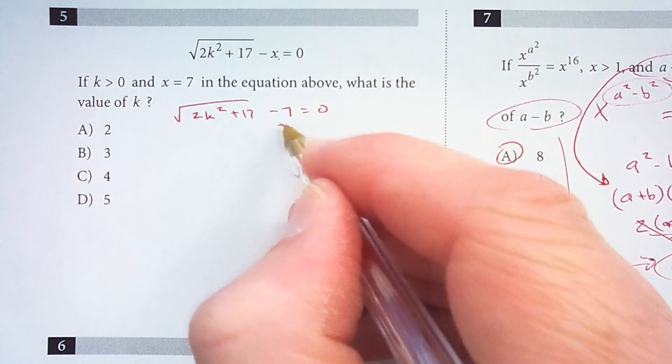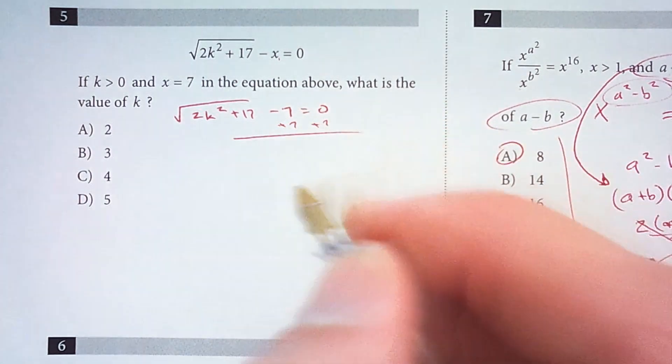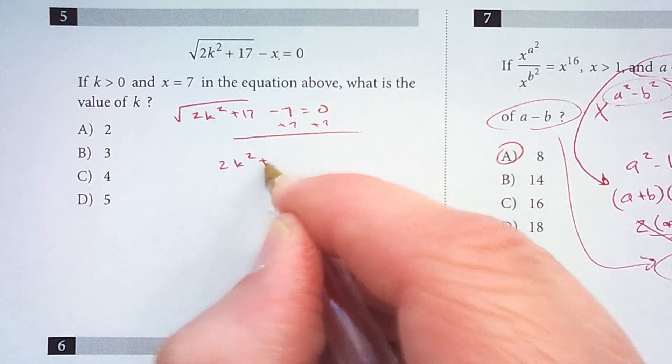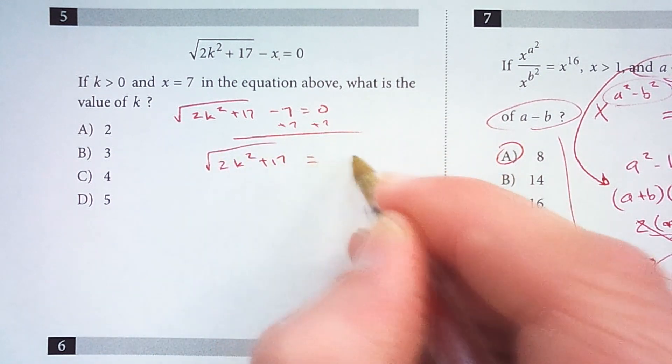So what I should do is add seven to both sides. So I get the square root of 2k squared plus 17 equals seven.